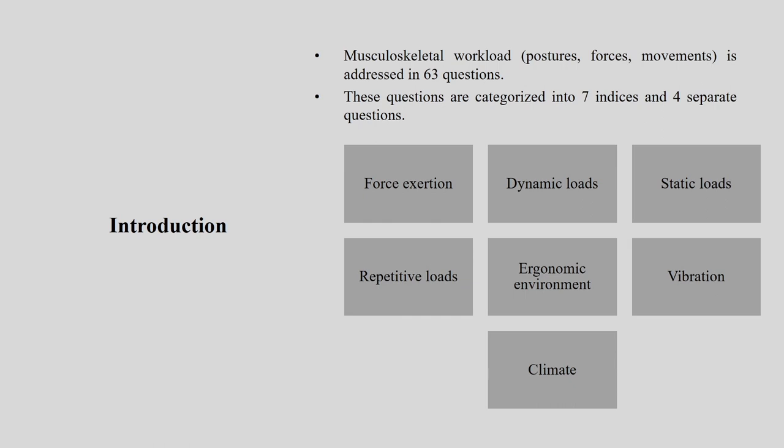Musculoskeletal workload — posture, force, and movement — is addressed in 63 questions in total. These questions are categorized into seven indices and four separate questions. The first index is force exertion, then dynamic load, static load, repetitive load, ergonomics environment, vibration, and climate. Here you can understand how detailed it is — maybe in a particular setting you have only force as a factor along with vibration, while other factors are not present or present at a negligible rate.